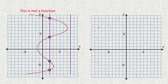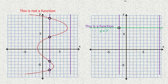Okay, last graph — we start with a line, let's end with a couple of lines. This is the horizontal line y equals 7. It goes through 7 on the y-axis and it's horizontal. If I draw a vertical line, look, it only crosses there — so it's a function. If I draw the vertical line over here, again it only crosses in one place, so it's definitely a function.